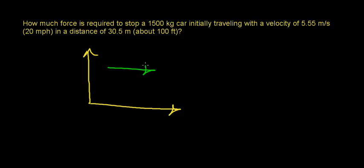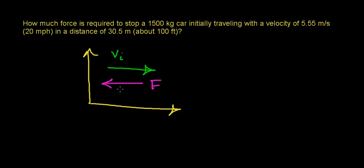Let's assume our car is initially traveling in one direction and it's going to come to a stop. In order to stop a car moving in this direction, we're going to need to apply a force in the opposite direction, so there's going to need to be a net external force bringing this car to a stop. Newton's first law says forces cause objects to speed up, slow down, or change direction, and Newton's second law says forces cause objects to accelerate in the direction of the applied force.